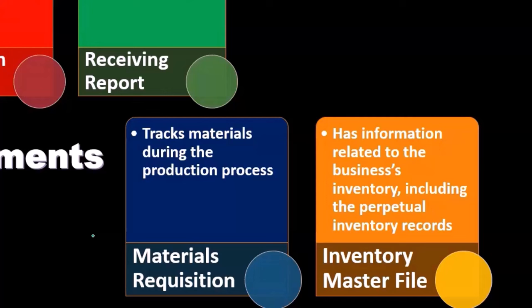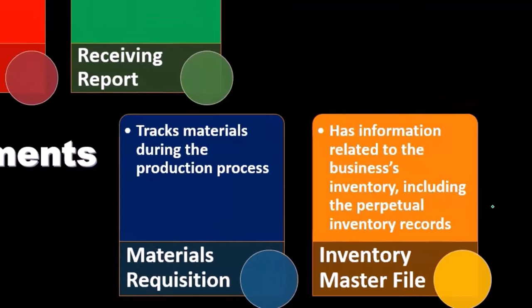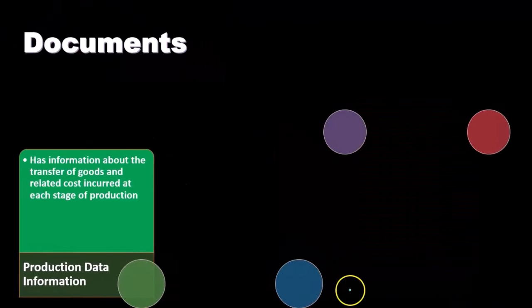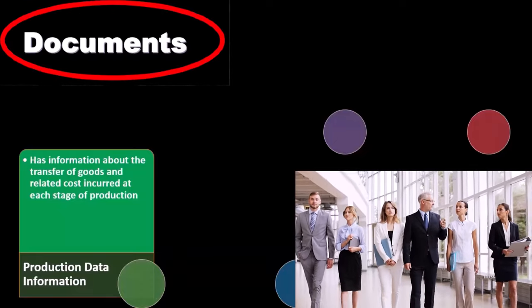The inventory master file has information related to the business's inventory, including the perpetual inventory records. This gives us the perpetual inventory records — similar to the subsidiary ledger we think of with accounts receivable and accounts payable — providing the detail we need with regards to inventory.